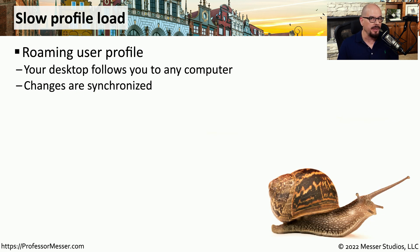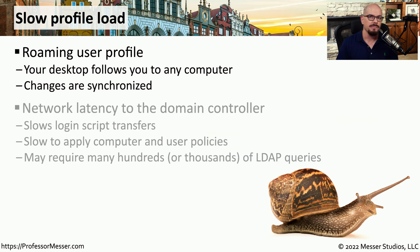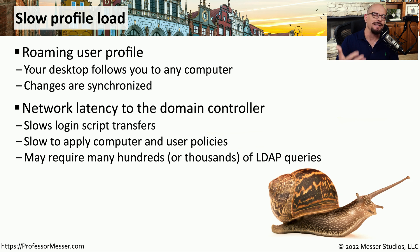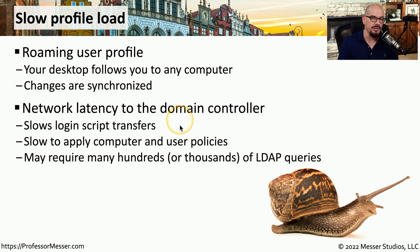If you work in a large office, you may be familiar with a Windows domain. One advantage of a domain is that you can log into any system, and it will download and use your local profile across all different pieces of hardware. However, there may be times when logging into another machine takes a very long time for that profile to download. This could indicate a problem with the network, so check the latency between you and the domain controller. High latency might cause login scripts to transfer slowly, or be slow to apply policies, and there could be hundreds or thousands of LDAP queries to the domain controller that slow down this entire process.